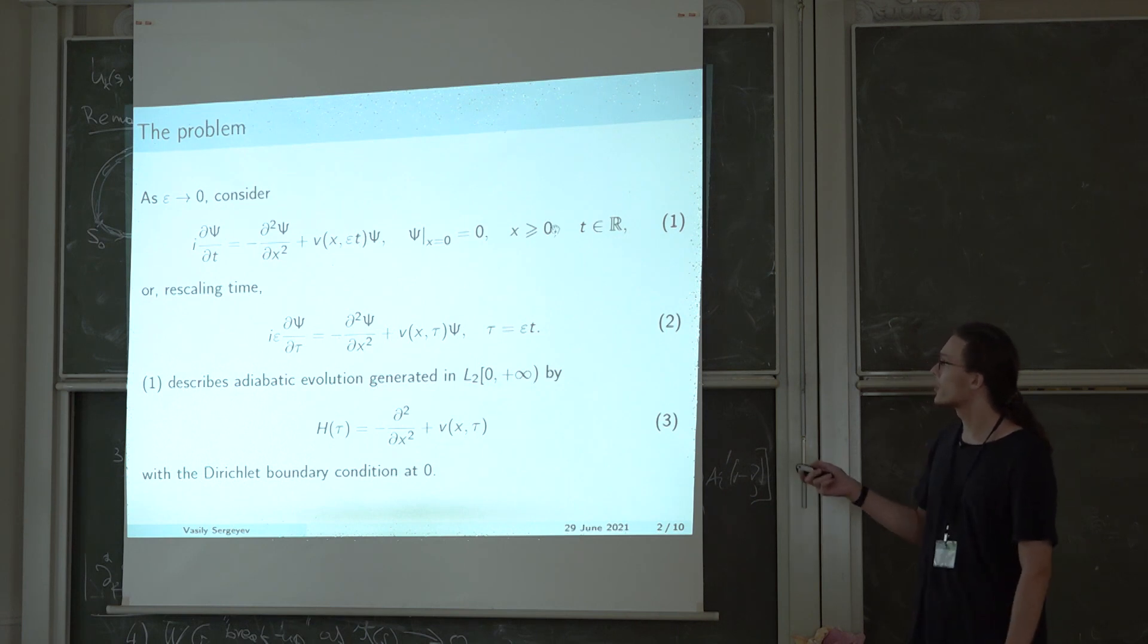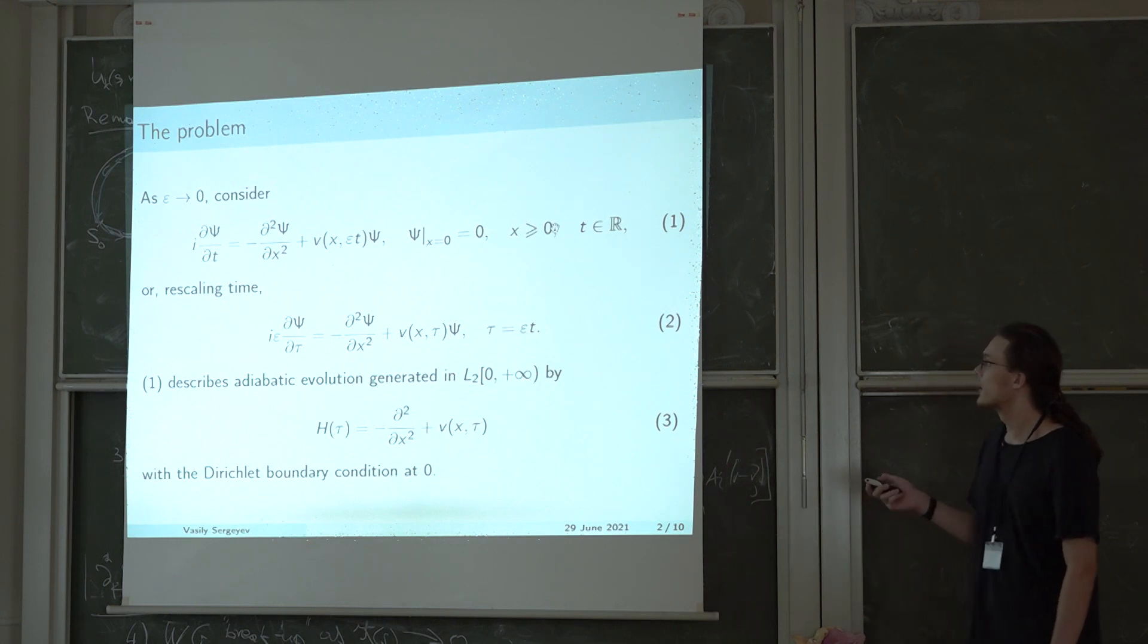The Schrodinger operator defined by the right-hand side of this equation acts in L2 on the positive half line. By rescaling time, this equation is often written in the form 2, especially in quantum mechanics by physicists.